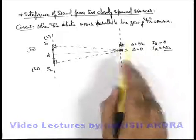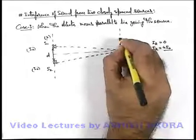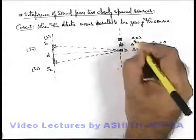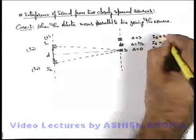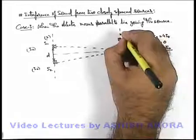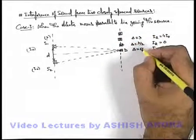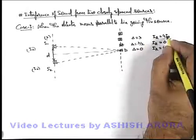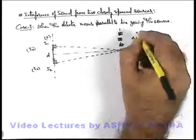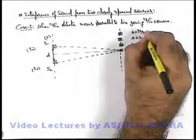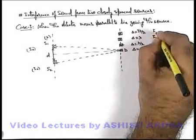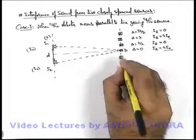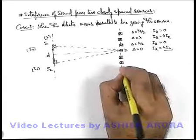Again if we move further, the intensity will start increasing, and at the position where path difference becomes λ, again the resulting intensity becomes 4I₀, and so on. At every path difference which is a multiple of the wavelength, constructive interference occurs so intensity will be 4 times the individual intensity. Whenever path difference is an odd multiple of λ/2, the resulting intensity drops down to zero. Similar maxima and minima will be obtained in the other direction if the detector moves there.